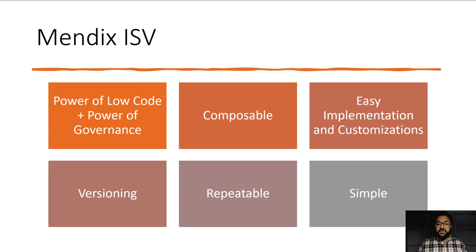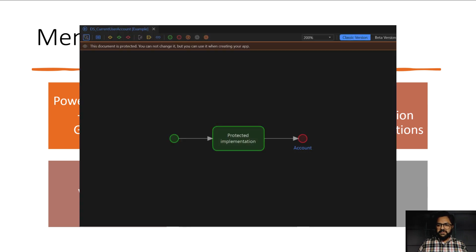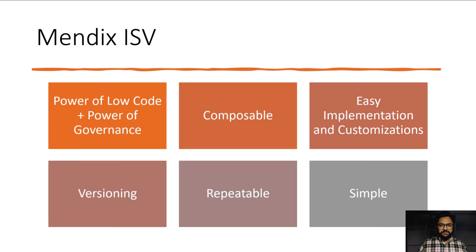You can keep your critical components safe, which will be hidden from your customers. Their application will be using what you've shipped to them in the background, but because you've marked those things as hidden, they cannot see the code inside it. This makes it very powerful in terms of governance — what you can open and what you can keep closed. That's Mendix ISV.